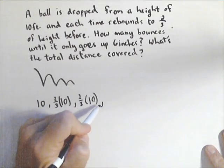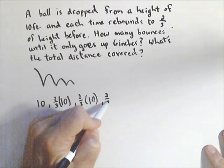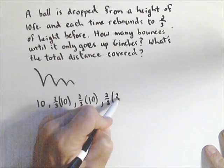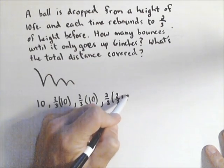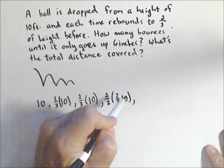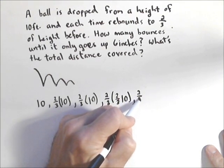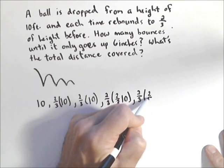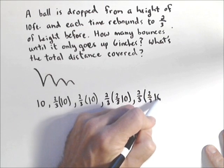Then it goes back up and it does two-thirds of the two-thirds of 10 feet, and then down, it does the two-thirds of the two-thirds of 10 feet again.